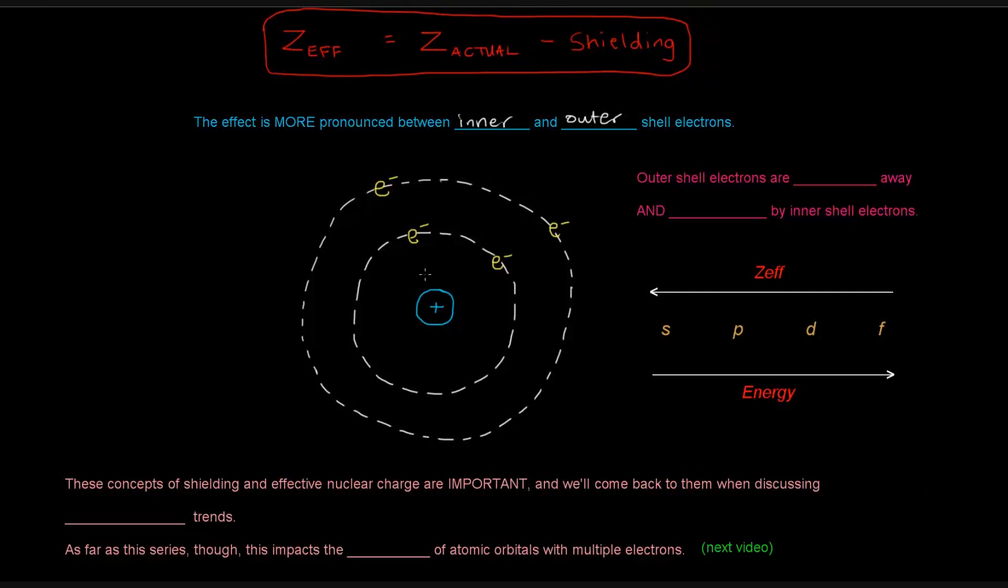So the inner shell electrons shield the outer shell electrons even further, even more, to a greater extent than the electrons shield each other in the same energy level.